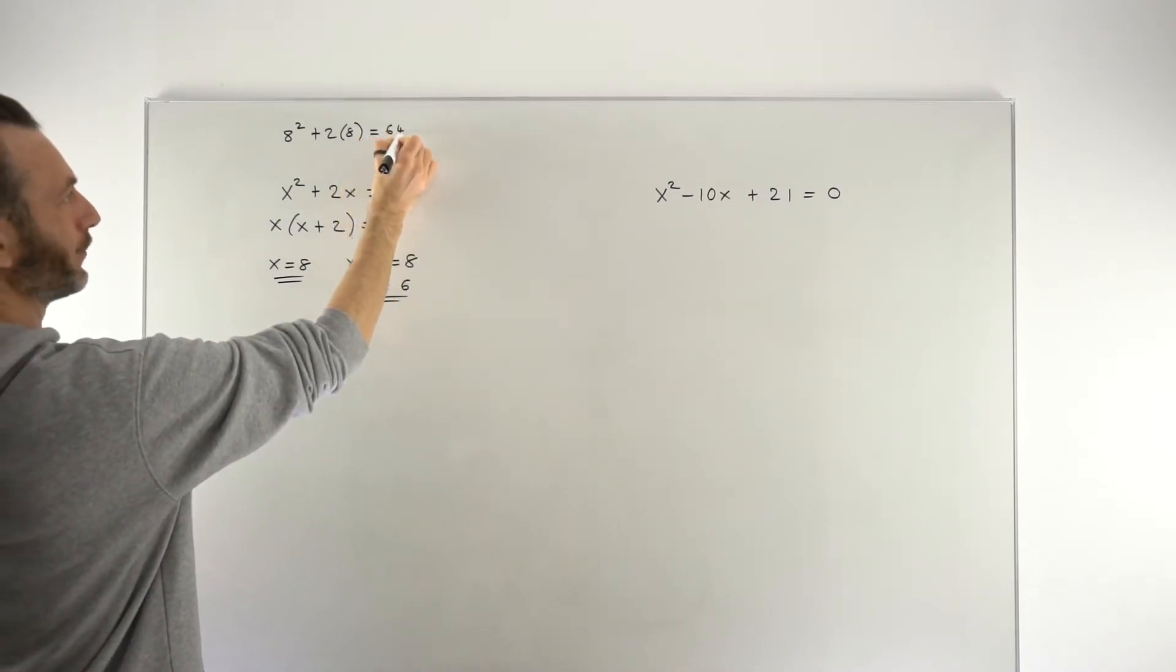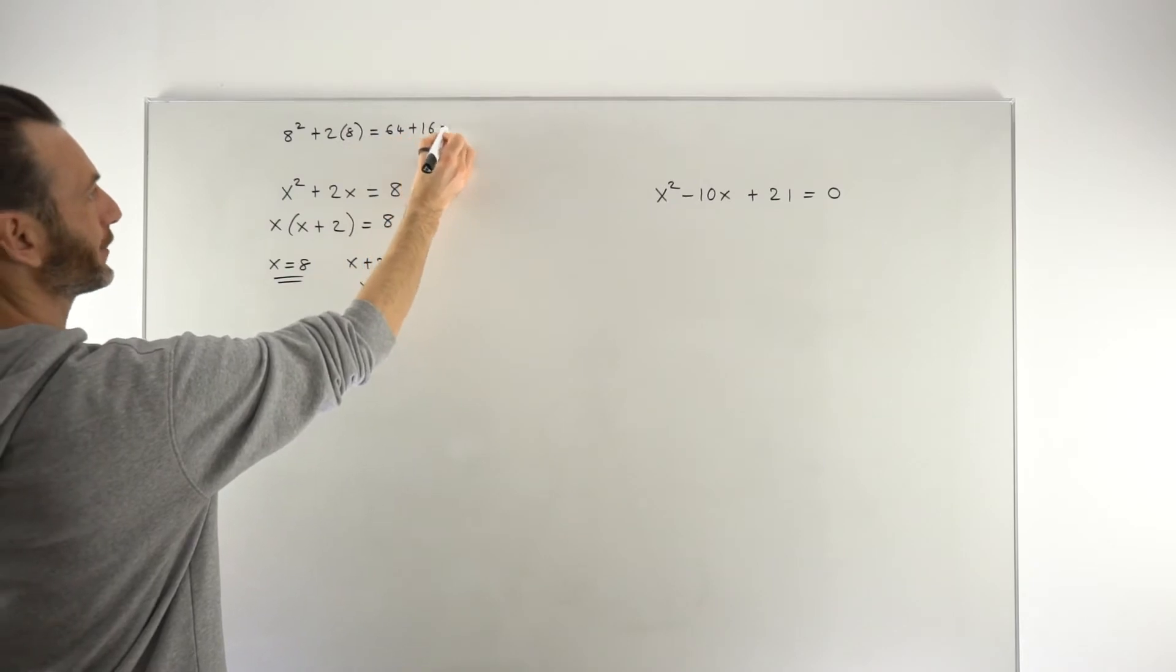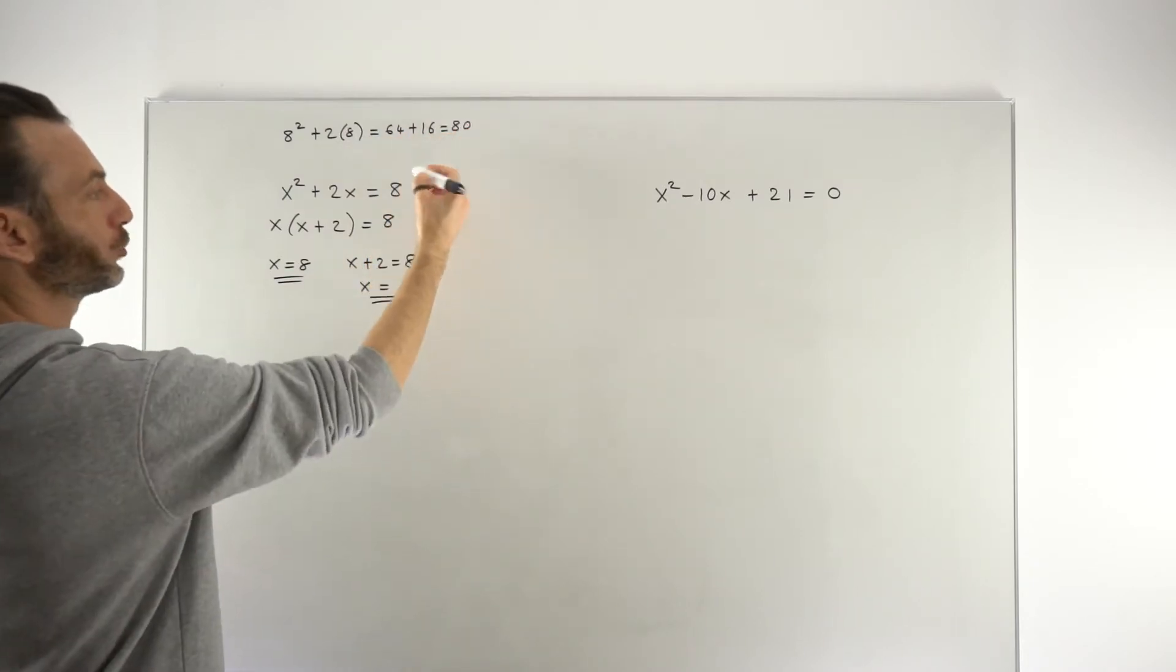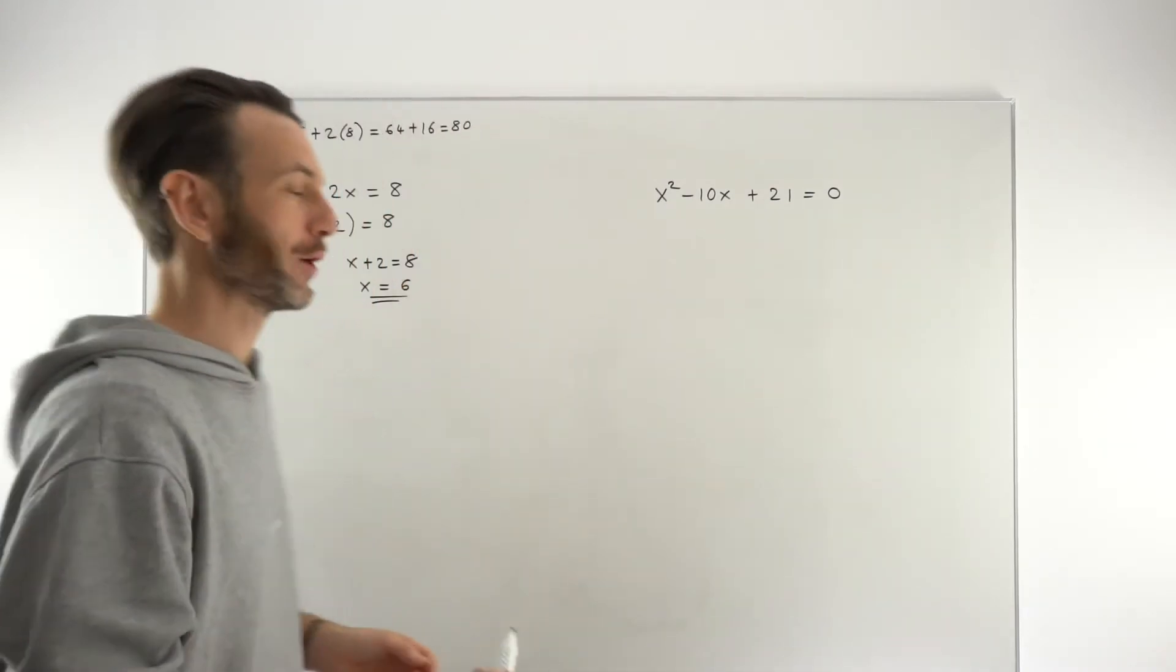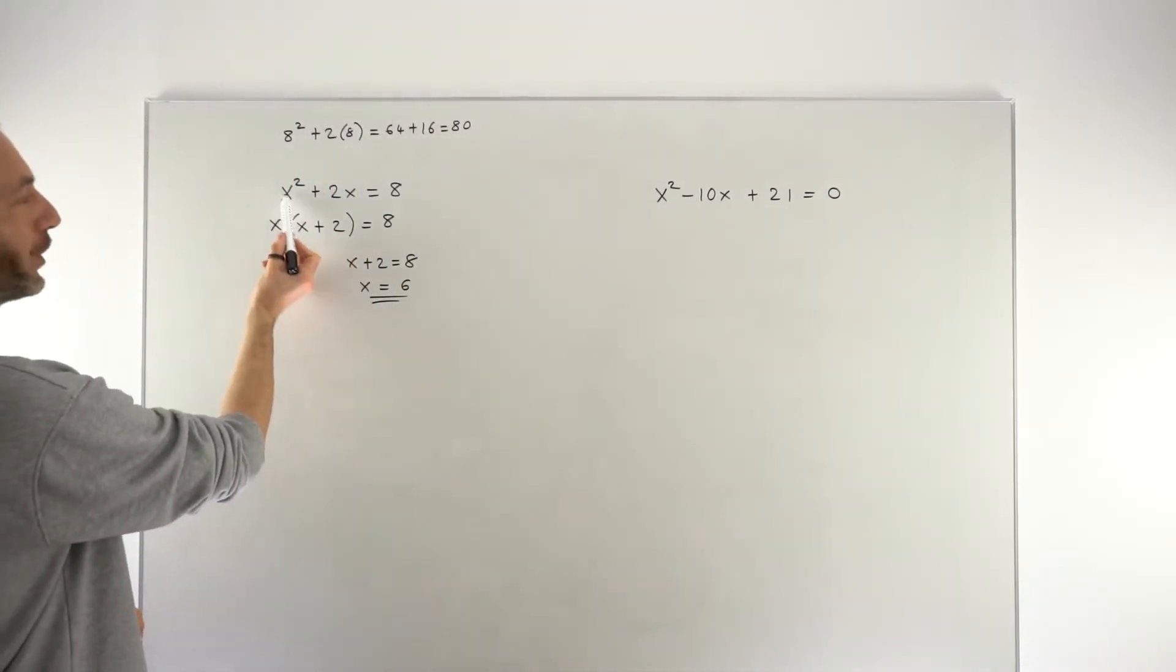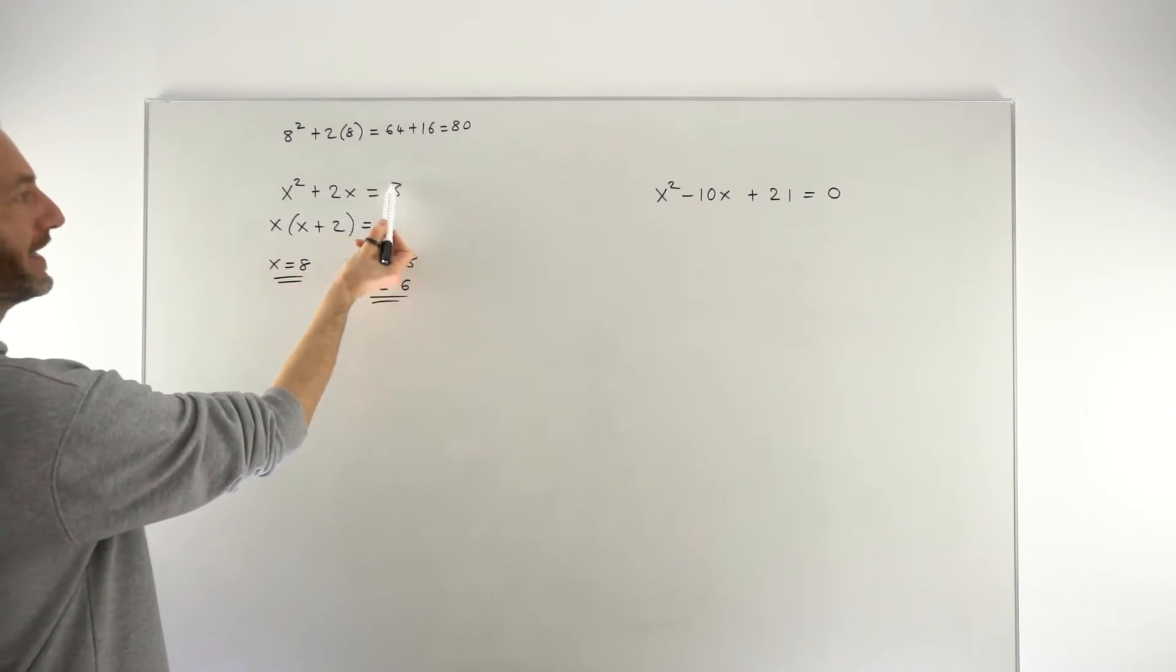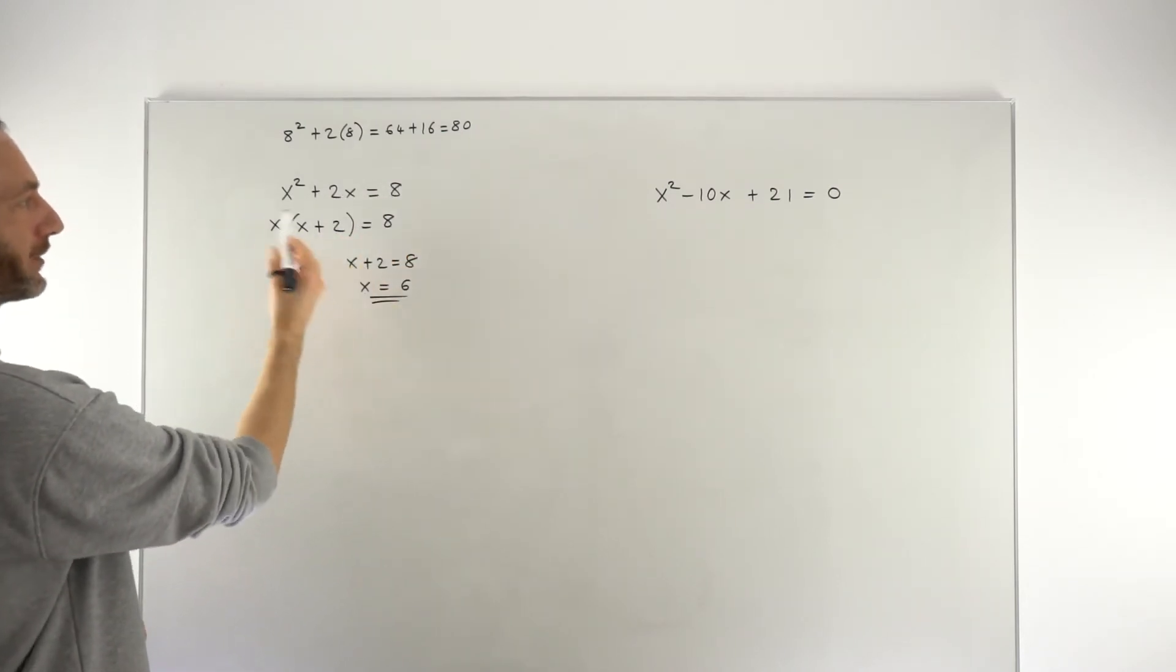But 8 squared is 64, 2 times 8 is 16 so that comes out to be 80 which is nowhere near 8 so it didn't even come close to satisfying the equation. So where did we go wrong in this question? Well we went wrong because quadratic equations have to be set equal to 0 before you factorise.